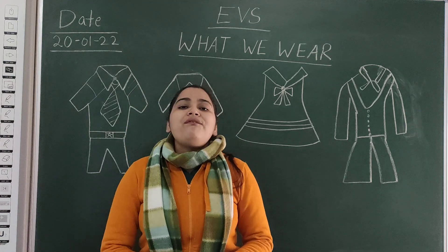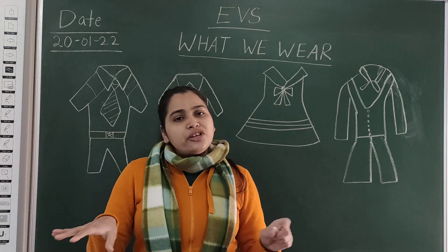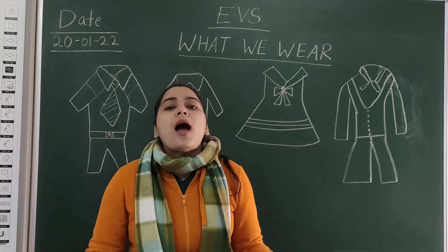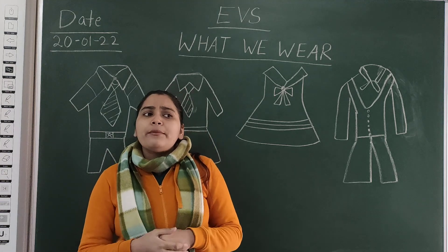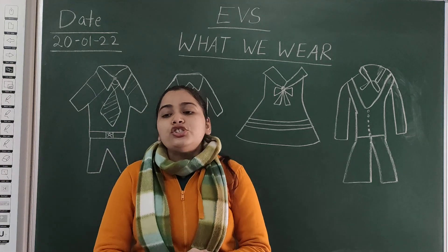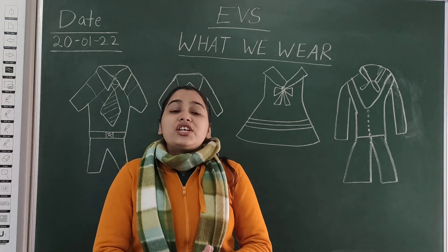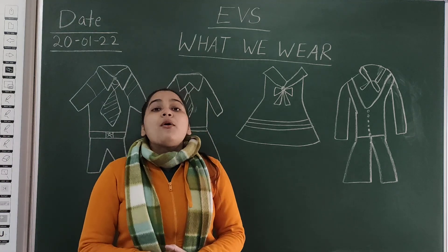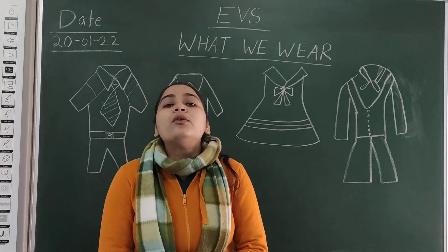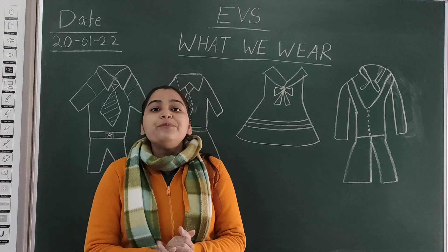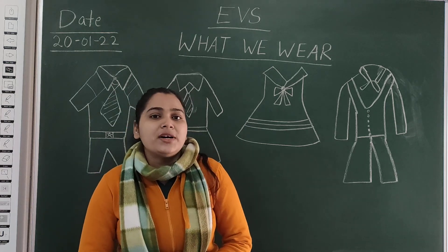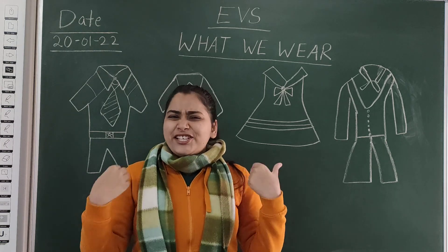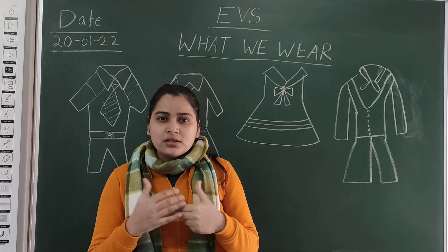So those are the dresses we wear at school and at a party. And if we are at home, what do we wear? If we are at home, we wear casual clothes — for example, lowers and T-shirts, which are comfortable. In summers, we wear shorts, T-shirts, and vests.